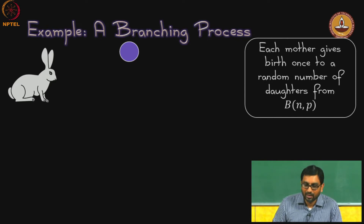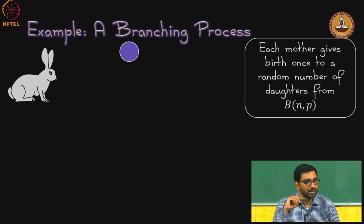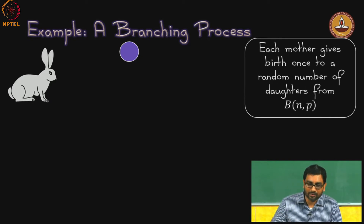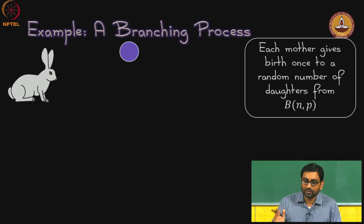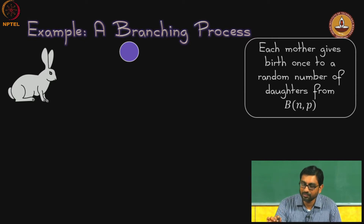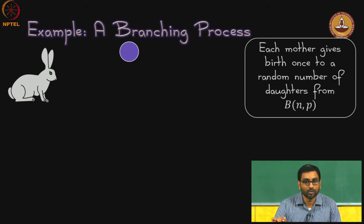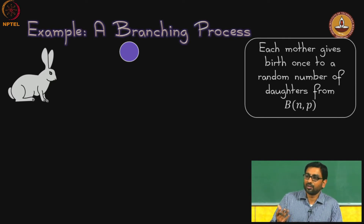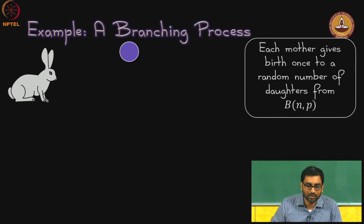Let us take rabbits. When modelling populations, a common simplification is to focus only on the females in the species. We start off with one mother, and make the assumption that each mother gives birth once to a random number of daughters, where this random number is drawn from the binomial distribution with parameters n and p. This is of course a modelling assumption — the real world may not work exactly this way.